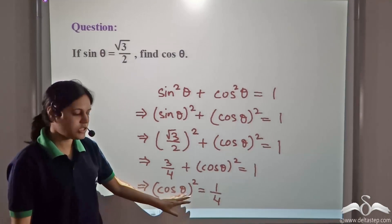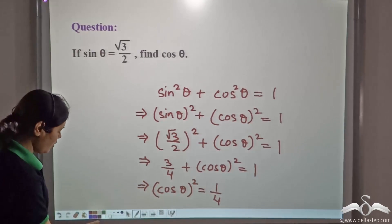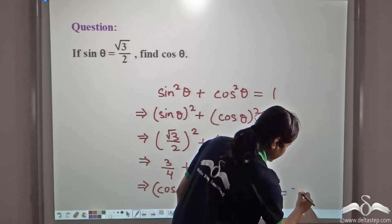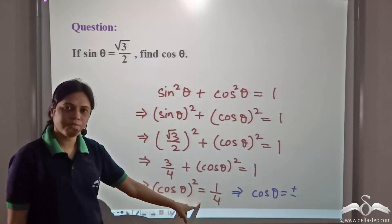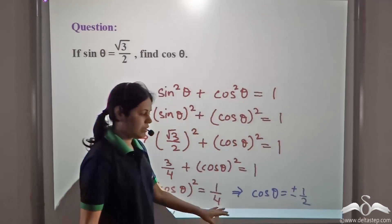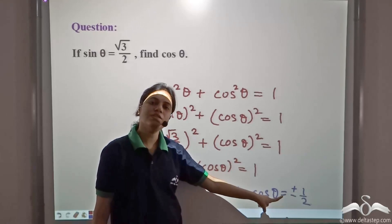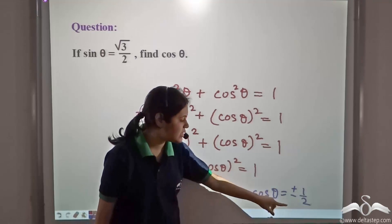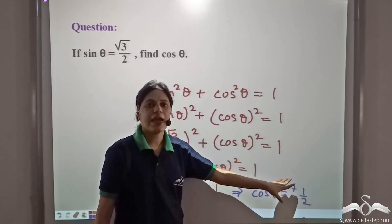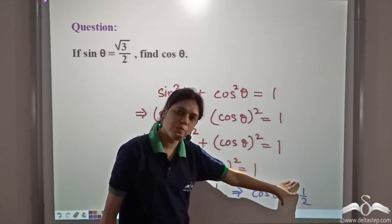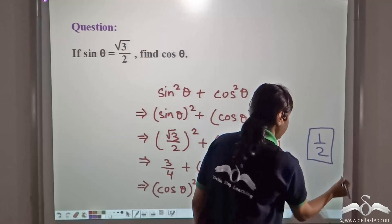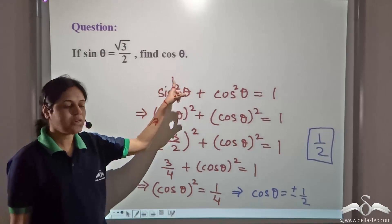Now, 1 minus 3/4 is 1/4. So, (cos θ)² equals 1/4. So, cos θ equals plus or minus √(1/4). Root of 1/4 is 1/2. So, it is plus or minus 1/2. Now, theta lies between 0 to 90 degrees, so we will consider only the positive value, because it is the ratio of the lengths of the sides, and since both sides are positive, this ratio will also be positive. So, cos θ equals 1/2.